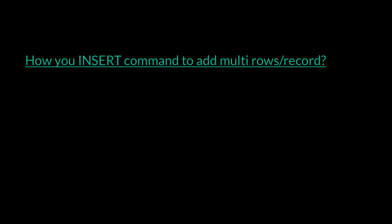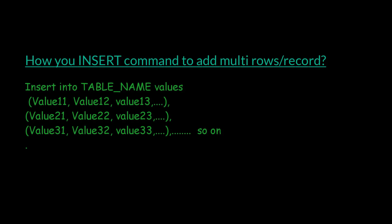To add multiple rows using the INSERT command, the syntax is: INSERT INTO table_name VALUES (first row values), (second row values), and so on. Here row1col1 means the first row value of the first column, and so on.